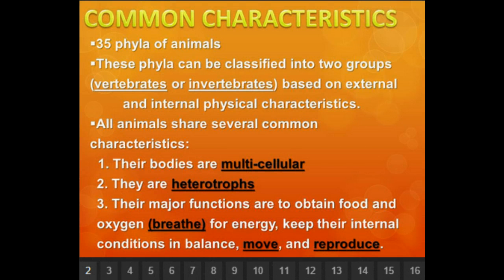The next topic is common characteristics. There are 35 phyla — more than one phylum is phyla. These phyla can be classified into two groups: vertebrates, those that have a backbone, and invertebrates, those that do not have a backbone, based on external and internal physical characteristics.